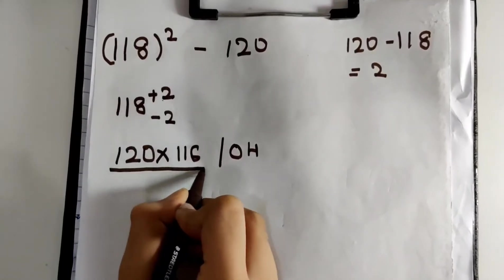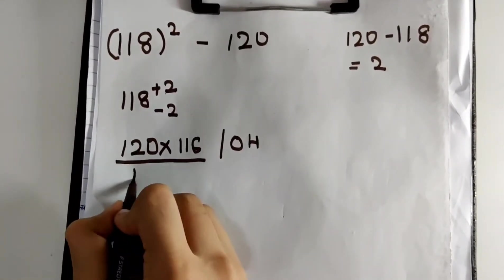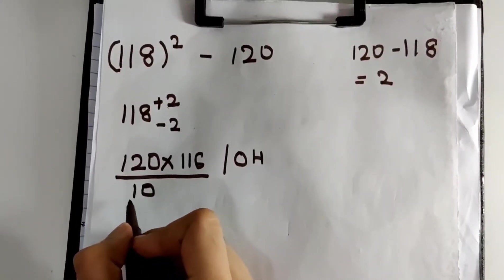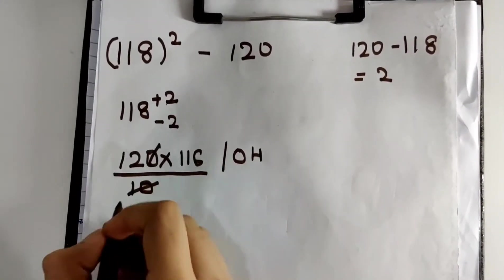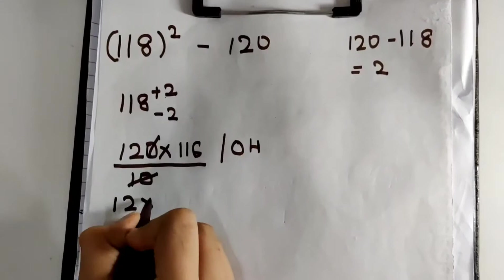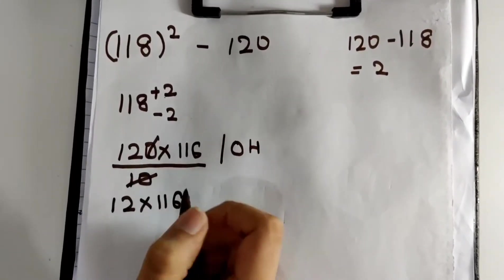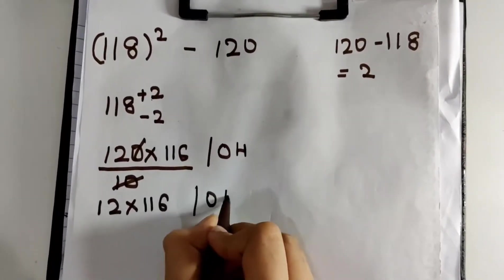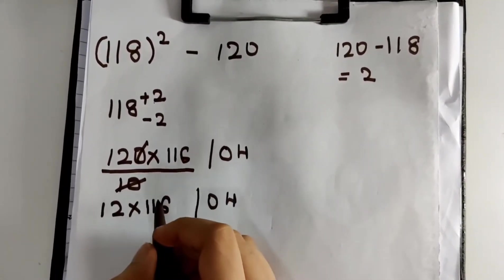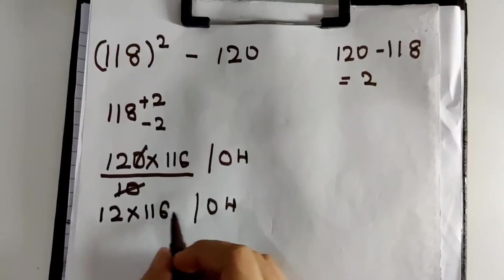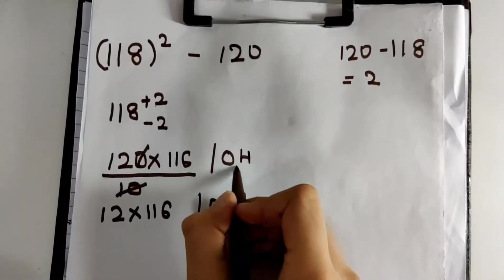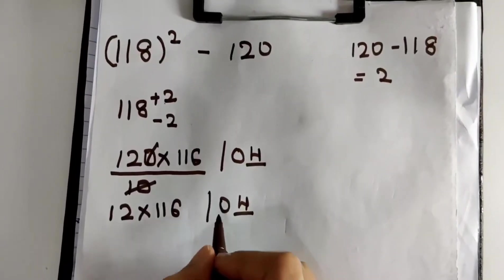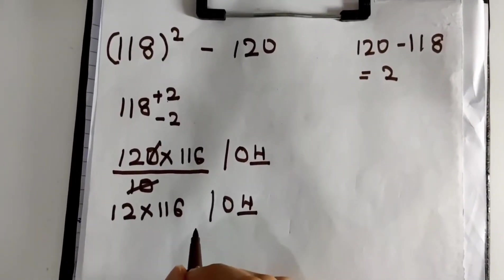Now what I have to do is cancel a 0 here. I will cancel one 0 by adding a 10 in the denominator. Canceling one 0 will give me 12 times 116 on my left-hand side. And on my right-hand side, I will write 04. But wait guys, I have to block one digit as 10 has been cancelled. I will block one digit. The remaining digit that is not blocked is 0.